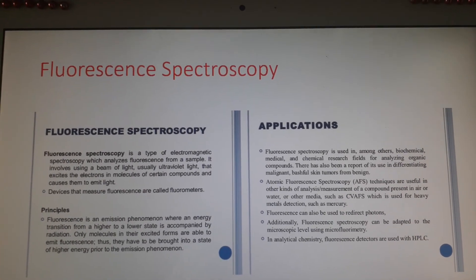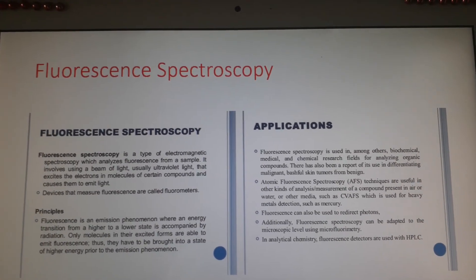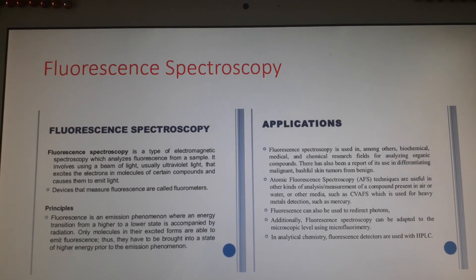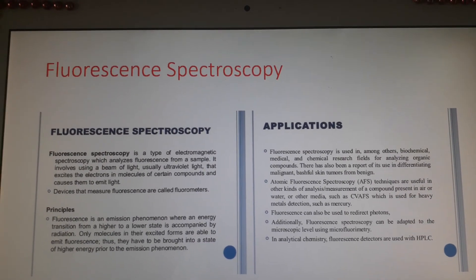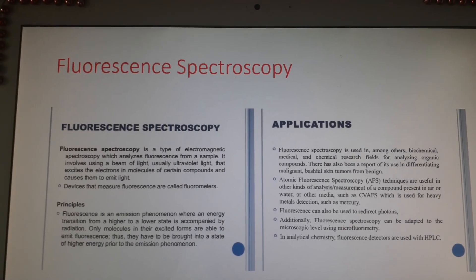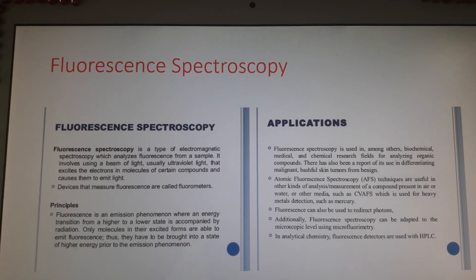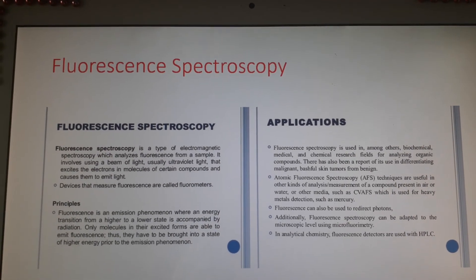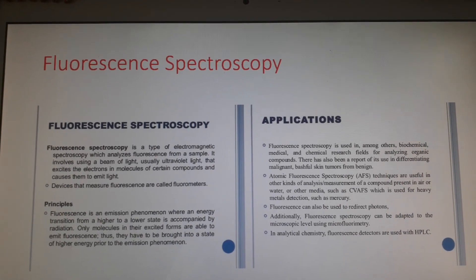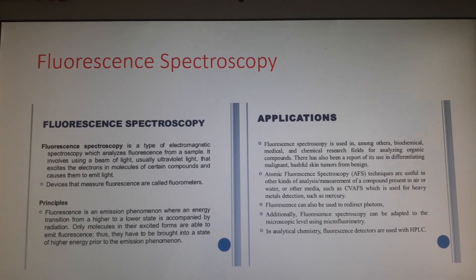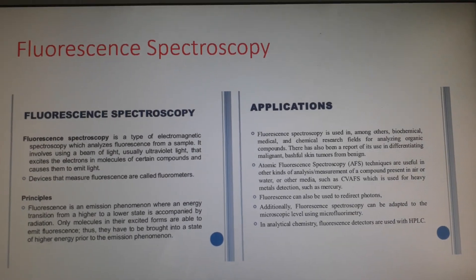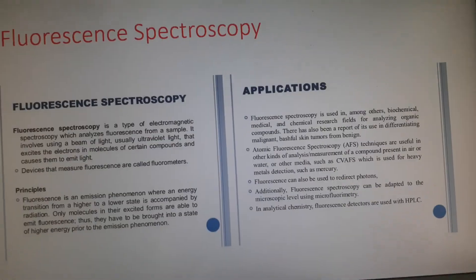Fluorometry is 100 times more accurate than absorbance methods. Using this method it is possible to determine two components emitting the same fluorescent color simultaneously, provided the respective wavelengths are sufficiently far apart. The only limitation of fluorometry is that fluorescence intensity depends on pH, therefore a careful buffer solution is required.